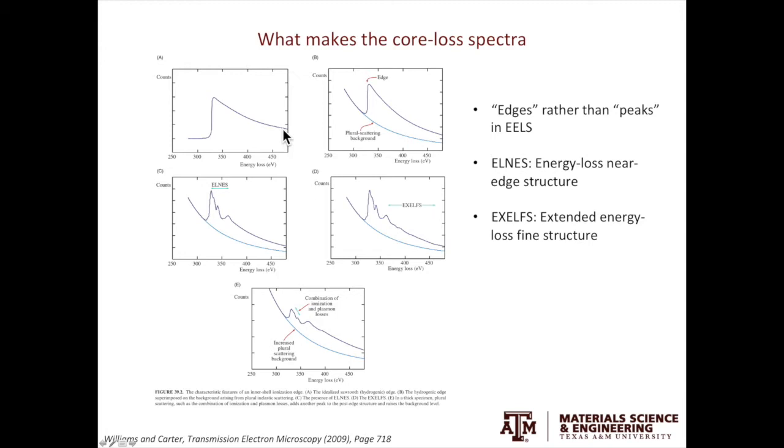In all spectroscopy, we always have a background. In EELS, the ideal hydrogenic edge will be superimposed on top of the background. Furthermore, when the core shell electron is getting ejected, it cannot go to any random places. It has to occupy one available state above the Fermi level.